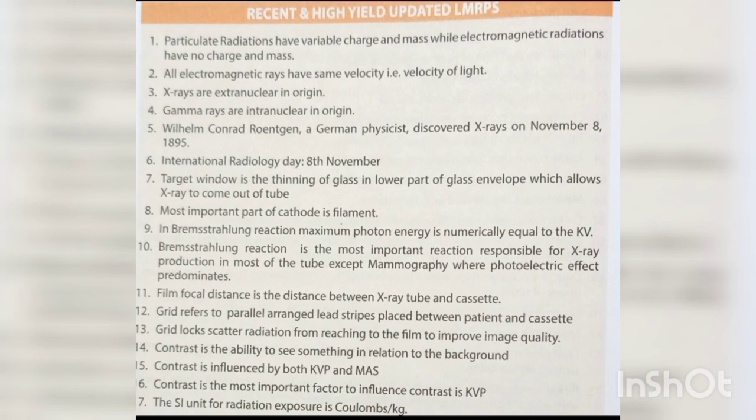Grid refers to parallel-arranged lead strips placed between the patient and cassette. Grid blocks scatter radiation from reaching the film to improve image quality. Contrast is the ability to see something in relation to the background. Contrast is influenced by both kVp and mAs; kVp is the most important factor influencing contrast. The SI unit of radiation exposure is coulombs per kg.